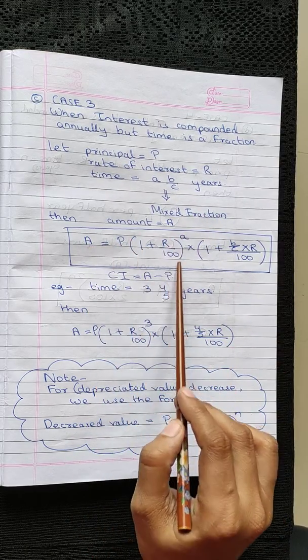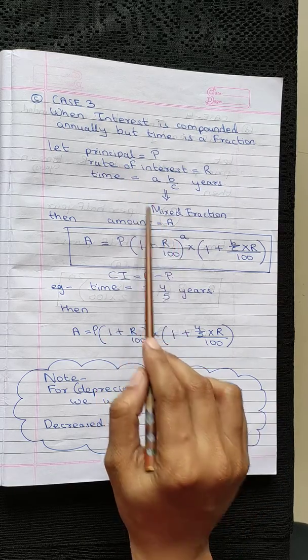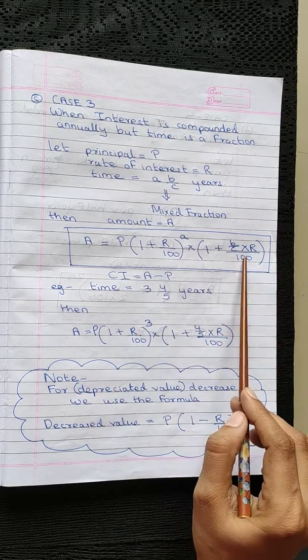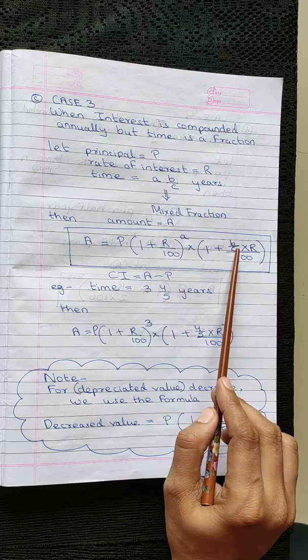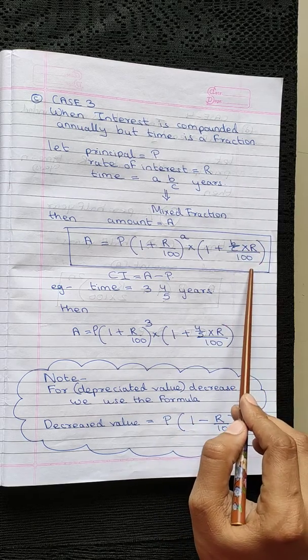In that case, in the first step we will consider the whole number of the time period, and in the second part we will take the fractional value and multiply it with the rate and divide by 100.